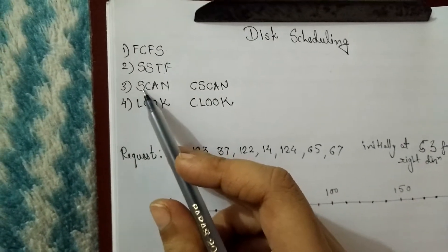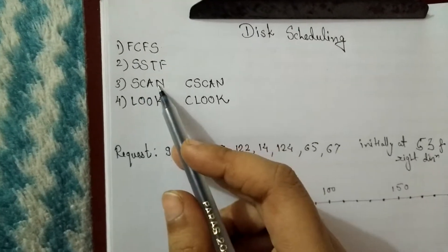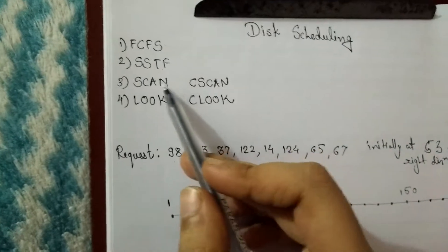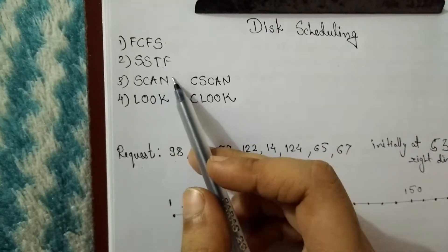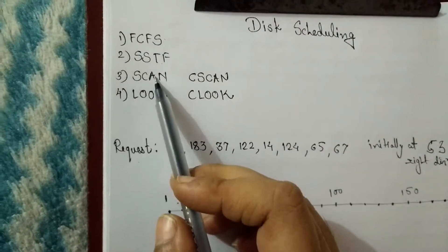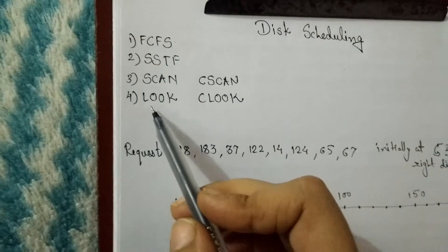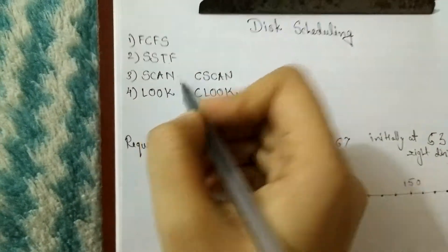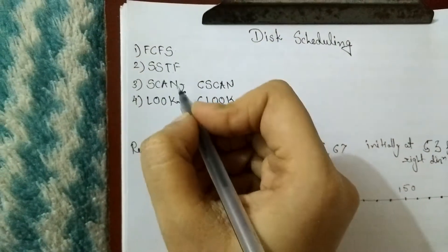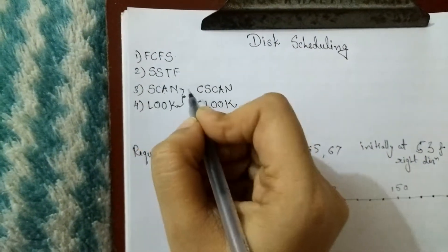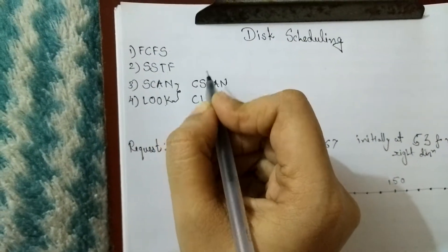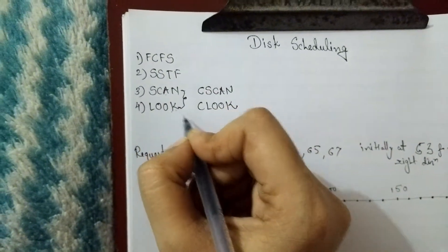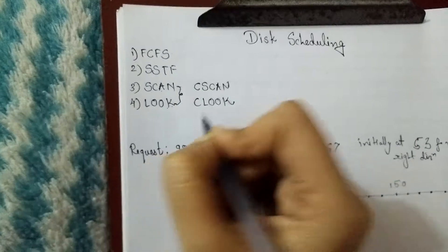The SCAN algorithm will go to one end of your cylinder and then come back and perform the remaining requests. LOOK is almost the same as SCAN, but while SCAN goes all the way to the end of the cylinder, LOOK only goes up to the last request.